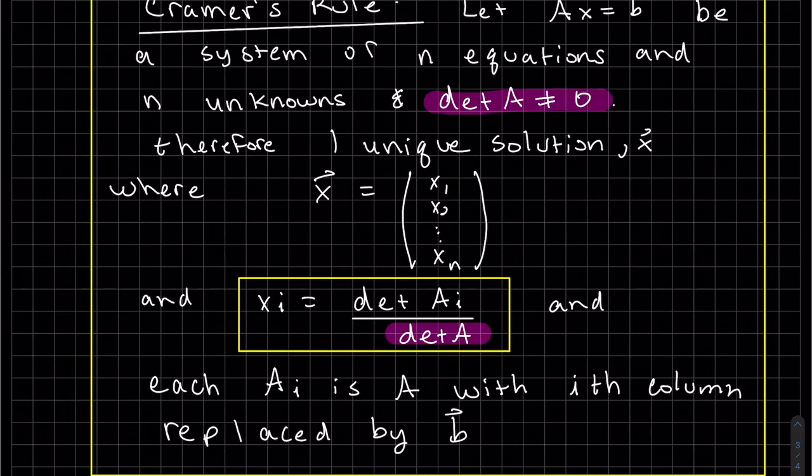So that's how I remember the order of these two. The determinant of A cannot be zero and that's the one on the bottom. Remember, we know there's one unique solution if the determinant of A doesn't equal zero. So this gives us that unique solution.